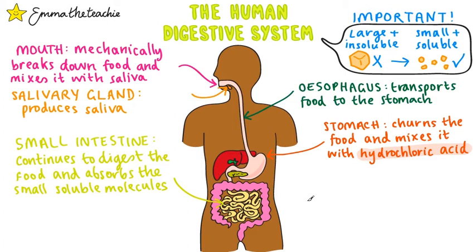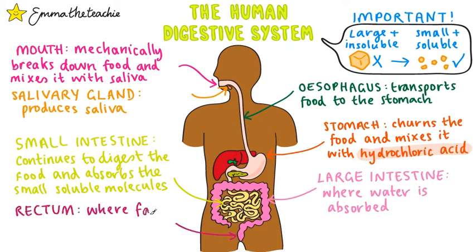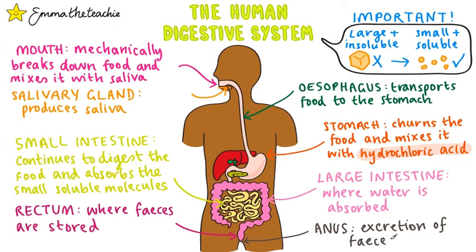Let's carry on with our journey through the digestive system. After the small intestines, the food passes to the large intestines. This is where water is absorbed from any undigested material. We call this undigested material feces and it gets stored in the rectum. Then finally, it gets excreted through the anus.